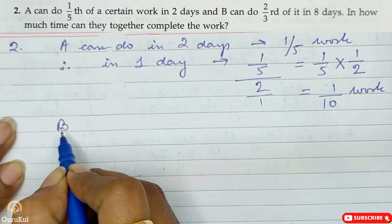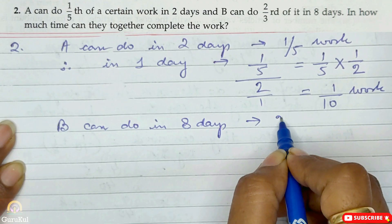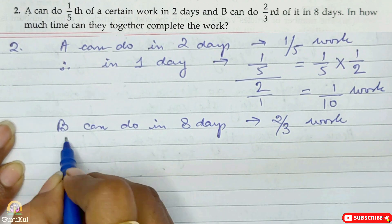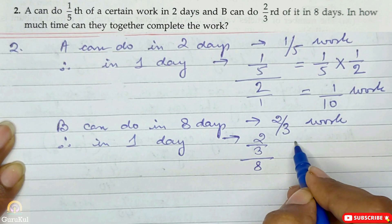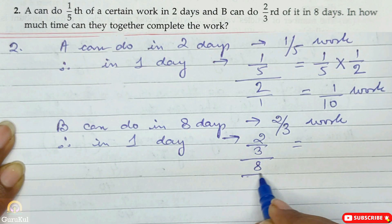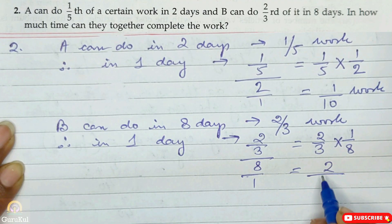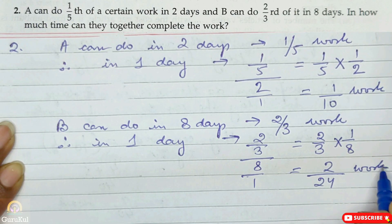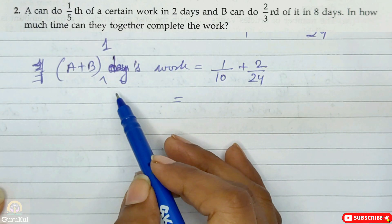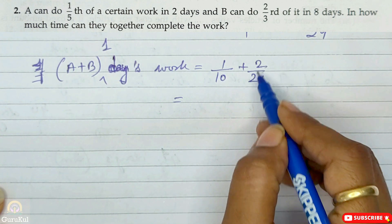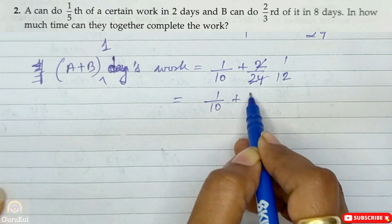Now for B: B can do two-thirds work in eight days. Therefore in one day, he can do two-thirds divided by eight, which is two-thirds into one-by-eight. That gives us two by twenty-four work. Two by twenty-four can be further reduced to one by twelve. So A and B's one day work is one by ten plus one by twelve.